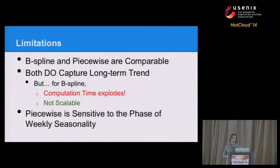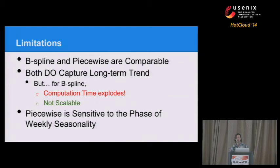One interesting finding was that the piecewise approach was sensitive to the phase where we started within the week. At Twitter there's both daily and weekly seasonality. If we started in the middle of the weekend, over a two-week period we'd only capture one full weekend, which significantly affected the anomalies found. So we found that aligning the window to get two complete weekends worked very nicely.